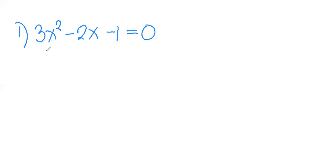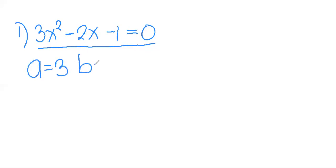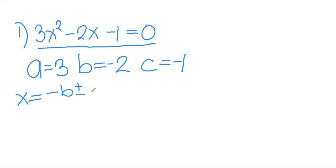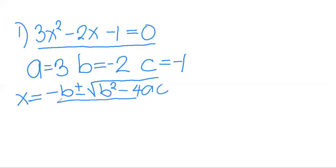To solve this using the quadratic formula, make sure the quadratic equation is written in its standard form first. Then identify the values of A, B, and C. In this example, the value of A is 3, the value of B is negative 2, and the value of C is negative 1. After identifying these values, we substitute them into the quadratic formula: negative B plus or minus the square root of B squared minus 4AC, all over 2A.